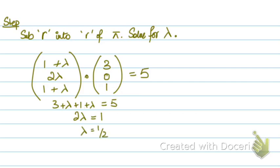So the value of lambda at the point where the line and the plane intersect is 1 upon 2. I missed the 2 over here, this step 2.